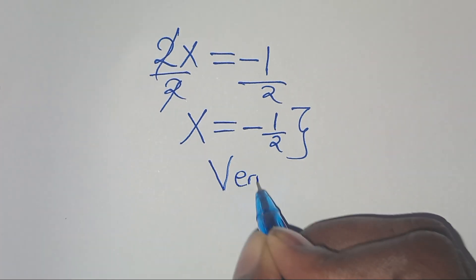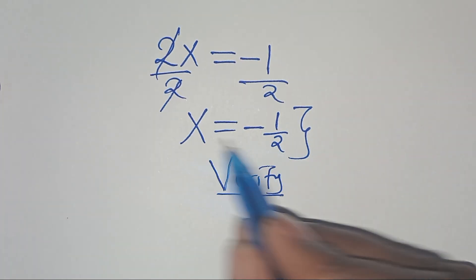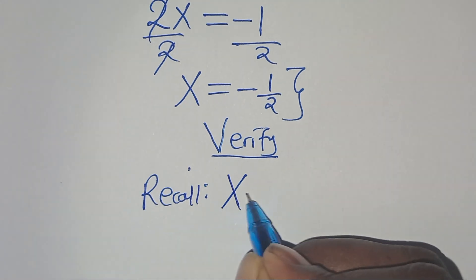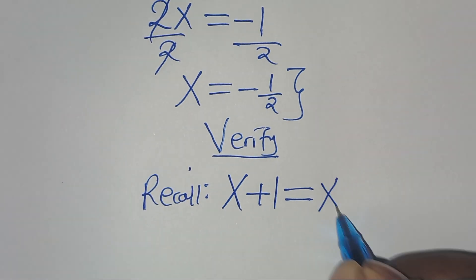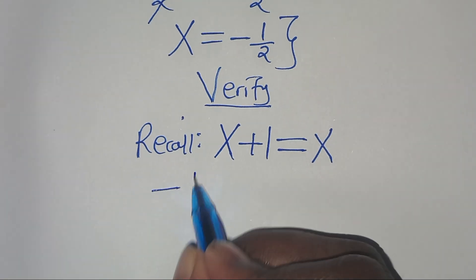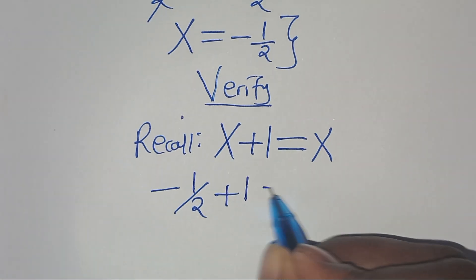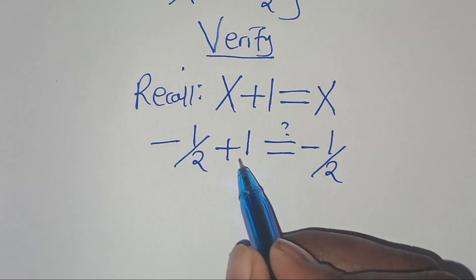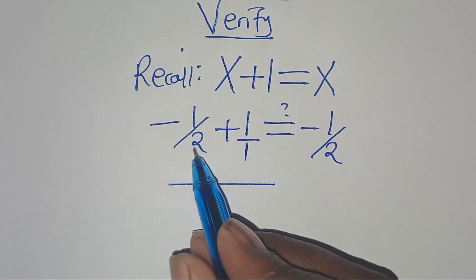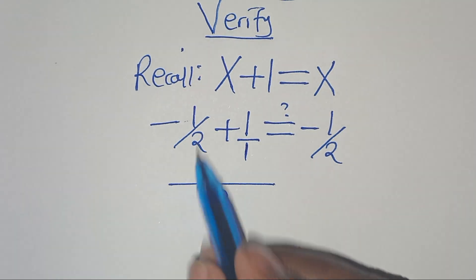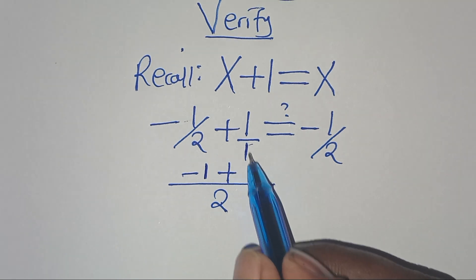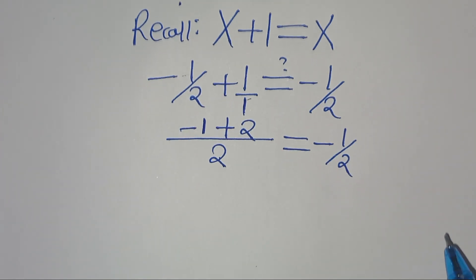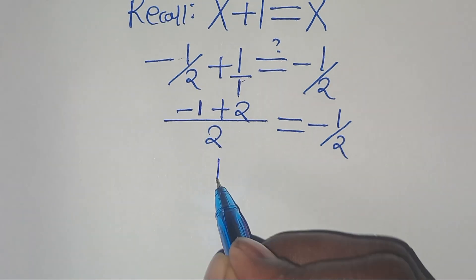This is the value of x. Let's verify if this value satisfies the equation. If you recall, we have x plus 1 equals x. So we have minus a half plus 1, and this is supposed to give us a value of minus a half. The LCM here is equal to 2, so 2 divided by 2 gives 1 times minus 1, which is minus 1, then plus 2 divided by 1, which is 2 times 1, equal to 2. Over 2 this equals minus a half. Now, minus 1 plus 2 is the same as a half.